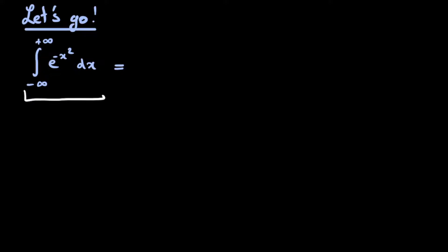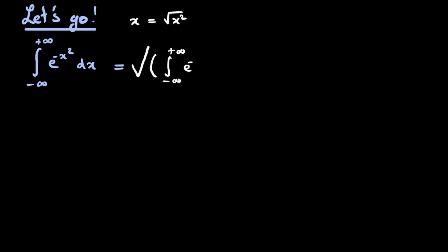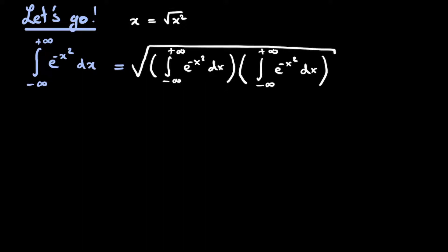What we're actually going to do first is to write this integral as the square root of the square of this integral, basically thereby doing nothing — it would be the same as saying that x is equal to the square root of x squared. So we write this integral as the square root of the integral from minus to plus infinity of e to the power of minus x squared dx, multiplied with itself.